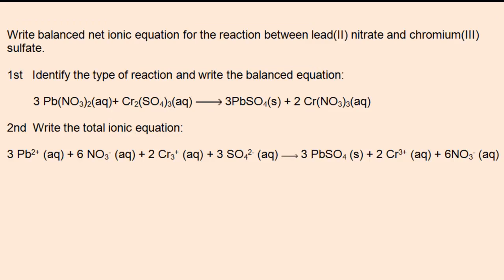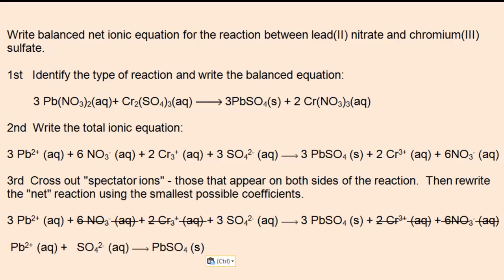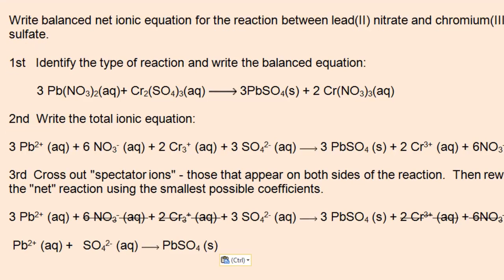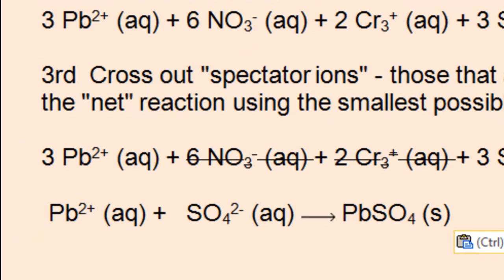After you've balanced the equation, next write the total ionic equation. Notice lead sulfate is left intact, and we break apart the other ionic compounds and their constituent ions. Finally, we can write the net ionic equation. Notice I used the simplest whole number ratio for the reactants and the product. One lead reacts with one sulfate to produce lead sulfate.